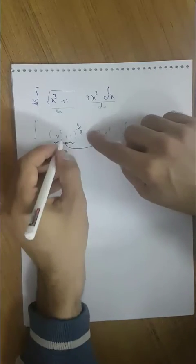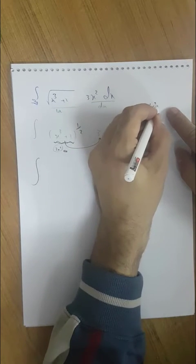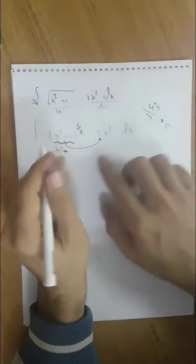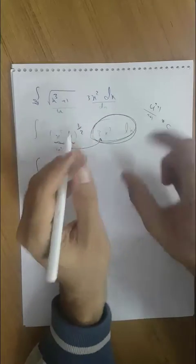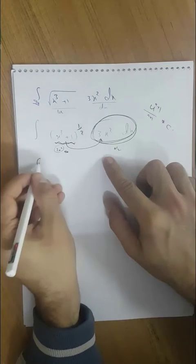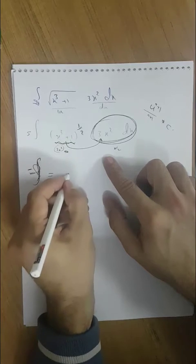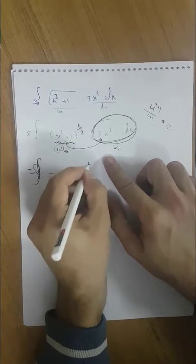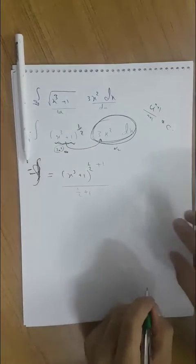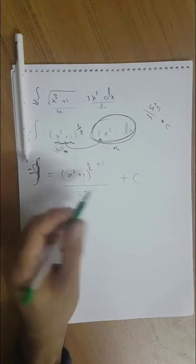We say if it's a u, we say u to power n gives n plus 1 over n plus 1 plus C. We combine this part as a du. That's why we put — we add — equal to: without integration, x cubed plus 1 to the power one-half. So we add 1 to the exponent and put it in the new part, then we add C.